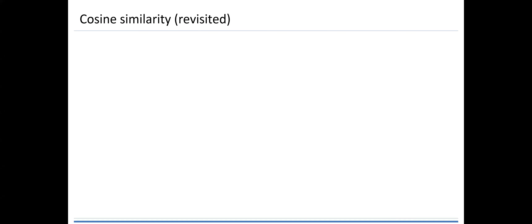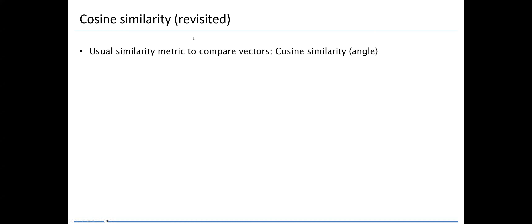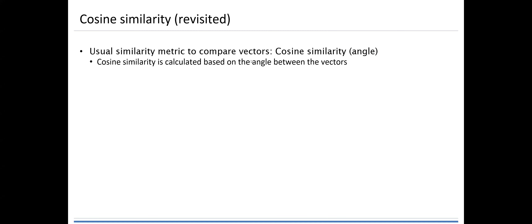This is the second video for the Content-Based Recommender system. Now let's take a look at the cosine similarity. It is revisited from the previous section, so you may already know the similarity matrix. We already learned the similarity matrix to compare factors, and we can use cosine similarity to look at the different angles. The cosine similarity is calculated based on the angle between the factors.